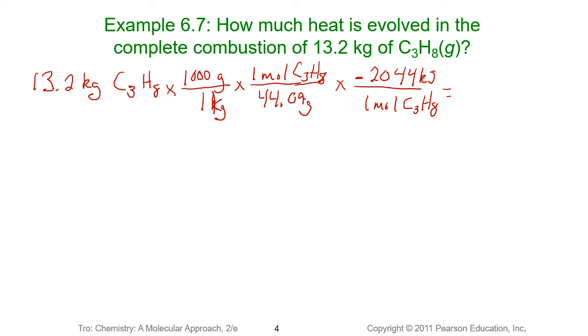So by multiplying across the top, dividing by anything on the bottom, you can see that burning 13.2 kilograms of propane will produce negative 6.12 times 10 to the fifth kilojoules of heat.